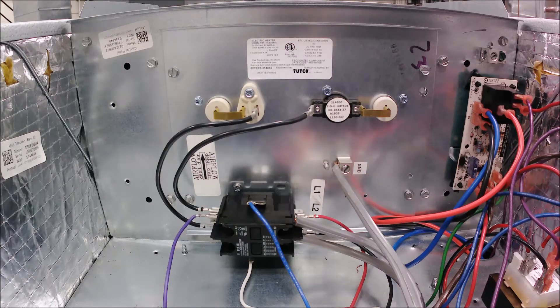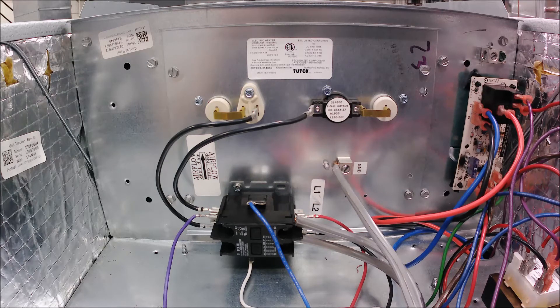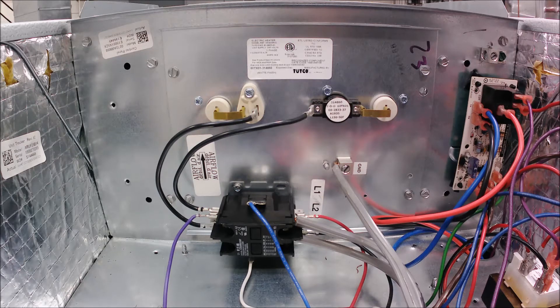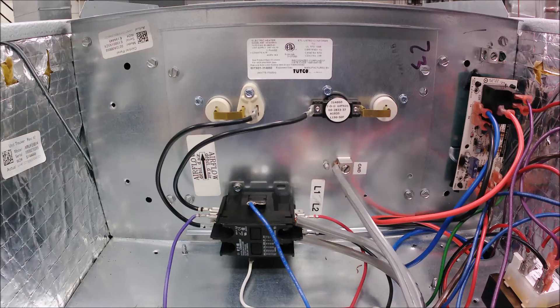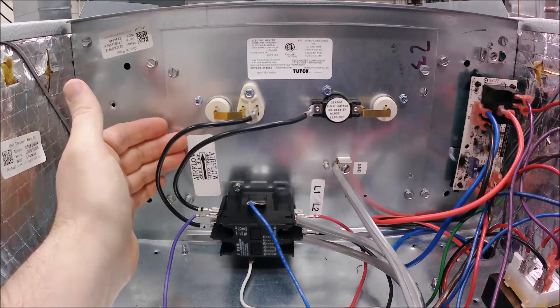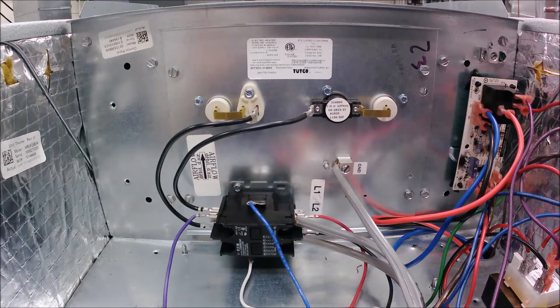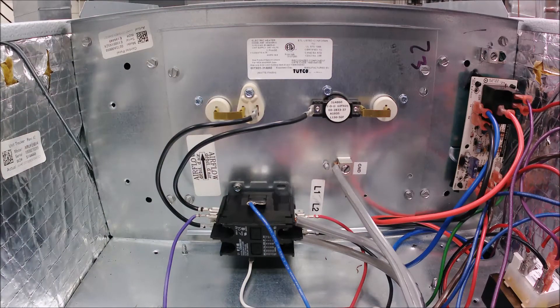Today we're going to do a little bit on troubleshooting with your meter. What I have in front of us is an electric heat system - there is no outdoor unit, it is simply the air handler with the electric heat kit installed. We're going to do a troubleshooting technique called hopscotch.